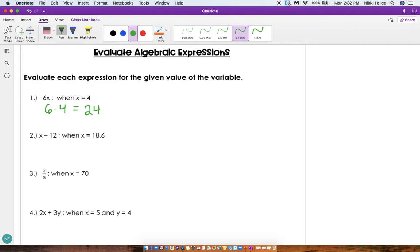Number 2: x minus 12 when x equals 18.6. So I'm going to take that 18.6 and substitute it in where the x is. Now we know that to subtract decimals we have to line up the decimal point. So I'm actually going to set it up over here on the right hand side: 18.6 minus 12.0. And we get 6.6. So that is our solution, that is our answer.